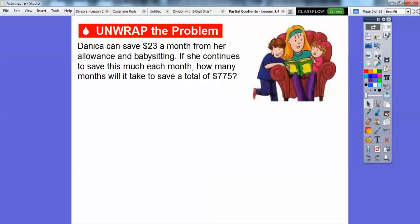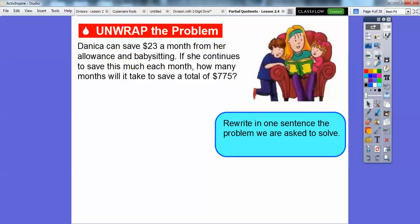Here's an example. Danica can save $23 a month from her allowance and babysitting. If she continues to save this much each month, how many months will it take her to save a total of $775? It looks like we're going to divide that 775 by 23. So rewrite in one sentence the problem we are asked to solve. This one's just saying what is 775 divided by 23? That'll get us our answer.